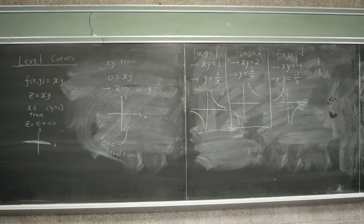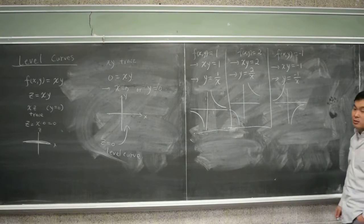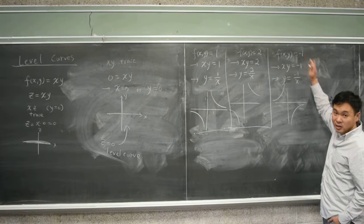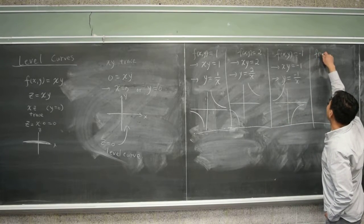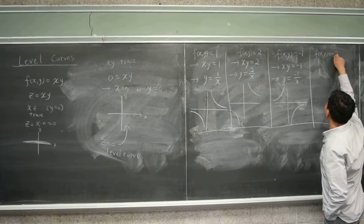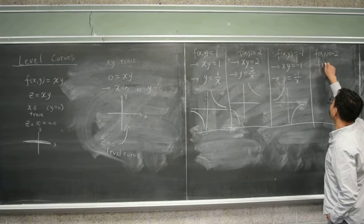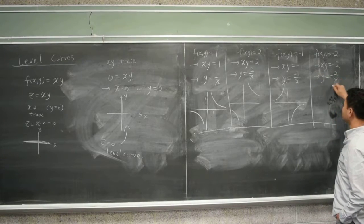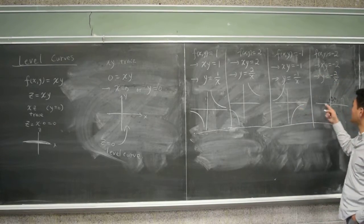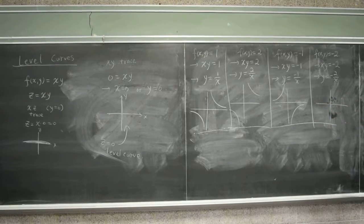So that's the graph for the level z equal to negative one. And finally, if you have f(xy) equals to negative two, that means x times y is negative two, which means y is negative two over x. And the only difference from this one is that it's just further away from the origin. It's like further away.